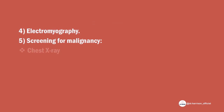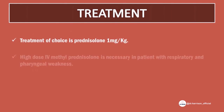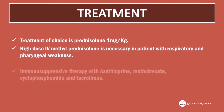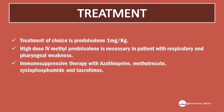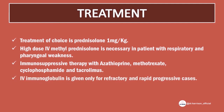Other investigations include screening for malignancy, chest X-ray, mammography, and pelvic ultrasound. Treatment of choice is prednisolone 1 mg/kg. High-dose IV methylprednisolone is necessary in patients with respiratory and pharyngeal weakness. Immunosuppressive therapy with azathioprine, methotrexate, cyclophosphamide, and tacrolimus may be used. IV immunoglobulin is given only for refractory and rapidly progressive cases.